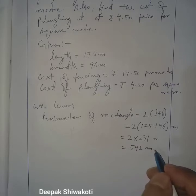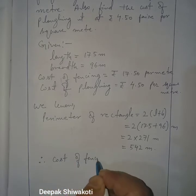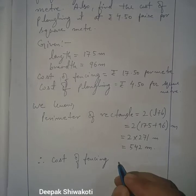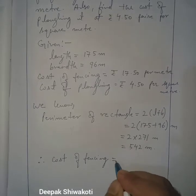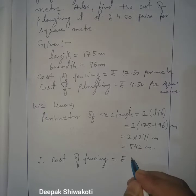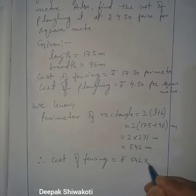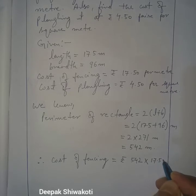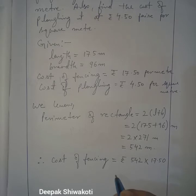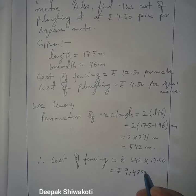Cost of fencing equals the total perimeter length into the price per meter, which is 542 into 17.50, and it equals rupees 9485.